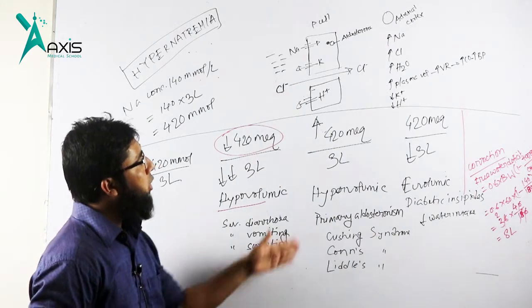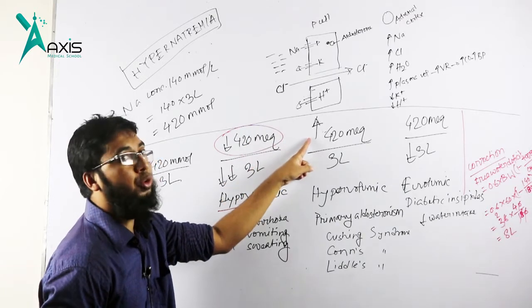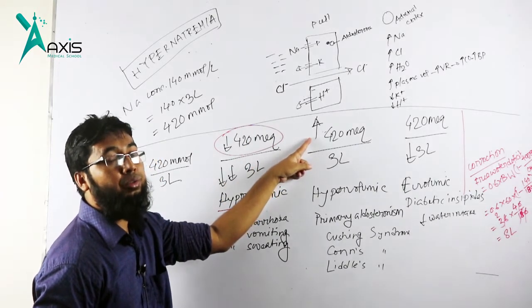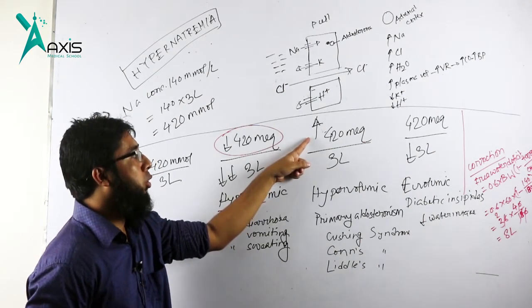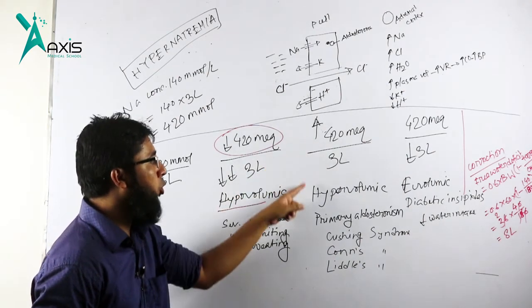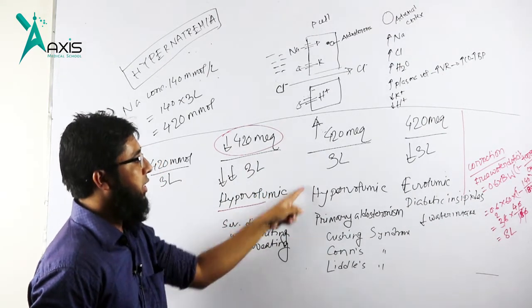Then, if it happens that there is absolute gain of sodium, absolute gain of sodium in the plasma, then we call it hypervolemic hypernatremia. That is increased volume of sodium.